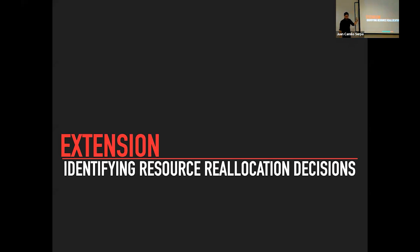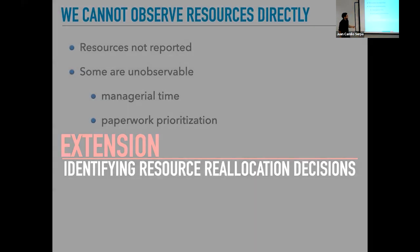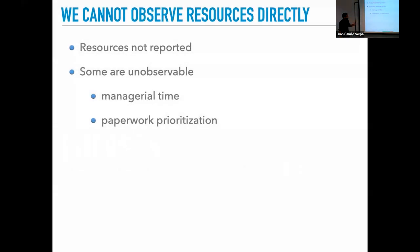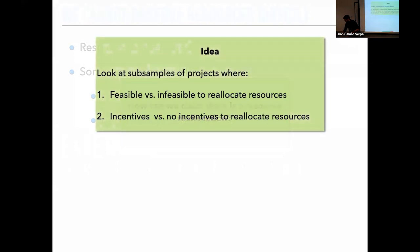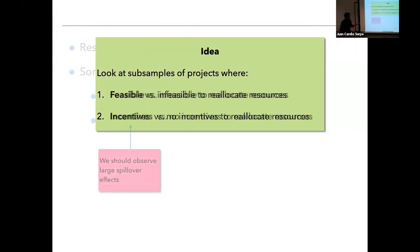Now, how can we know these spillovers are happening because of resource reallocations, given that resources are unobserved and not reported in the data? We do this by examining subsamples where resource reallocation is feasible versus infeasible, and where there are incentives versus no incentives to move resources. If we can show that spillovers occur in the feasible-and-incentivized subsamples but not in others, we can claim this is driven by resource reallocations.